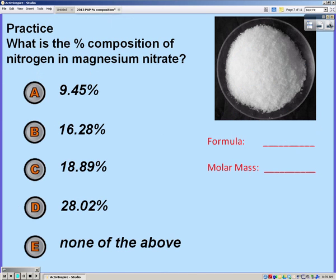Go ahead and pause the video and try this one on your own. For your formula you should have gotten Mg(NO3)2, and molar mass you should have gotten 148.33. Solving this correctly, you should have gotten 18.89 percent.